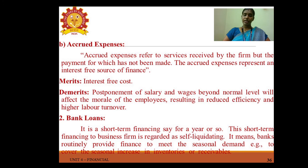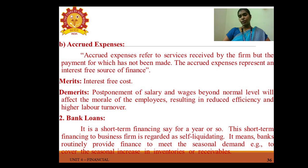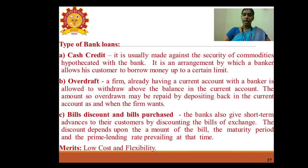Accrued expenses refer to services received by the firm for which payment has not yet been made; they represent an interest-free source of finance. Merits: interest-free cost. Demerits: postponement of salary and wages beyond normal levels will affect employee morale, resulting in reduced efficiency and higher labor turnover. Bank loans are a short-term financing option regarded as self-liquidating; banks routinely provide finance to meet seasonal demand and cover seasonal increases in inventories or receivables.